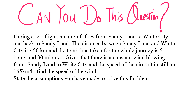So during a test flight, an aircraft flies from Sandy Land to White City and back to Sandy Land. The distance between these two cities is 450km. Total time taken for the whole journey is 5 hours 30 minutes. Given that there's a constant wind blowing from Sandy Land to White City and the speed of the aircraft is still at 165km per hour, you are asked to find the speed of the wind and you need to state the assumptions you have made to solve this problem.